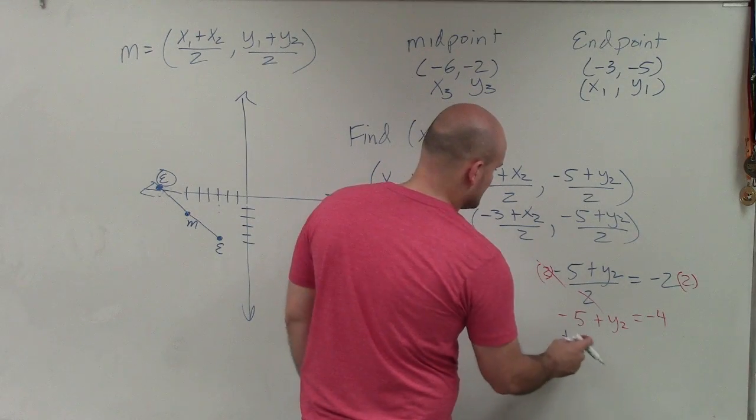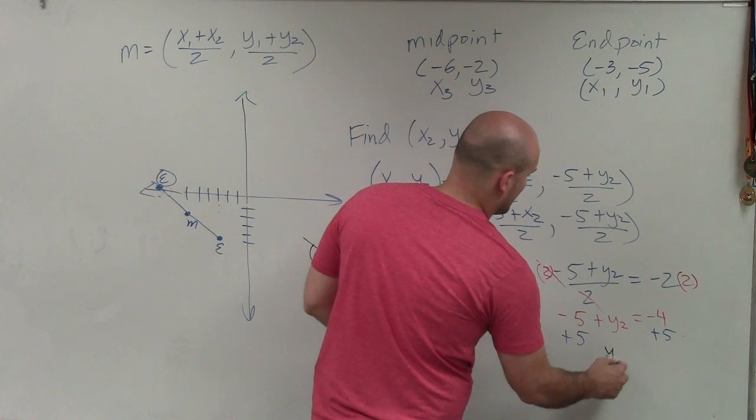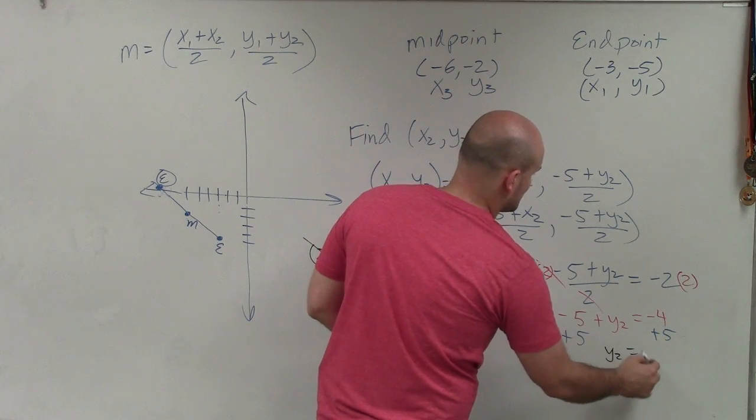And using my inverse operations, I'll add a 5 to both sides. And therefore, I have y2 equals positive 1.